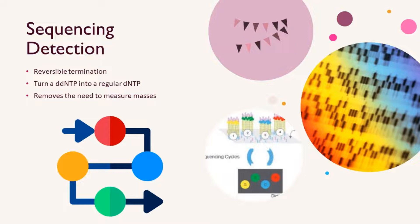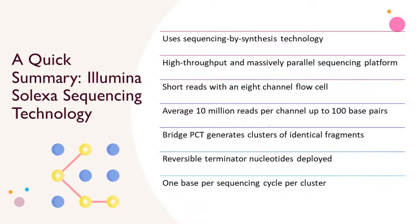Because of reversible termination, Illumina sequencing removes the need to measure masses, in contrast to the gel electrophoresis procedure required for Sanger sequencing. Illumina sequencing can sequence billions of template strands simultaneously, which greatly increases the throughput.